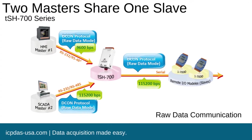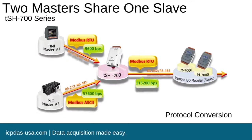These are some examples of our TSH700 series. This is raw data communication with two masters and one slave, and this one is showing a protocol conversion.